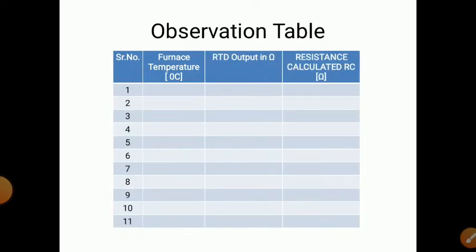Similarly, one more observation table is required for RTD. First column is furnace temperature in degrees Celsius, and the second column is RTD output in ohms — because as temperature increases, resistance increases, so output is in ohms. A third column is the calculated resistance RC. We take readings at 10 degree Celsius intervals from 10 up to 100, and note all readings.